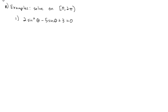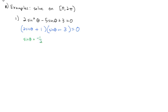Let's try: 2sin²θ − 5sinθ + 3 = 0. With sine squared, just like with x squared, we're probably going to factor and set each factor equal to zero. So: (2sinθ − 1)(sinθ − 3) = 0, which gives us sinθ = 1/2 or sinθ = 3.